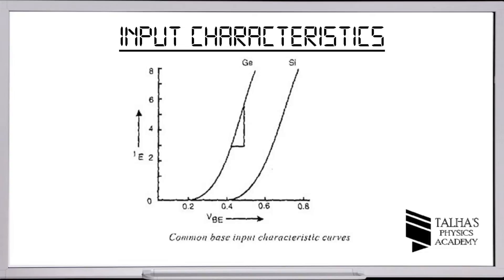This is the input characteristics of an NPN transistor, plotted for two types: germanium and silicon. The pattern is the same except for the starting point — 0.2V for germanium and 0.4V for silicon. On the x-axis, base-emitter voltage is plotted, and on the y-axis, emitter current is plotted.